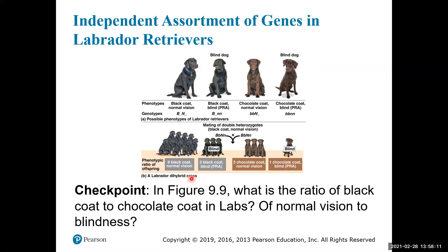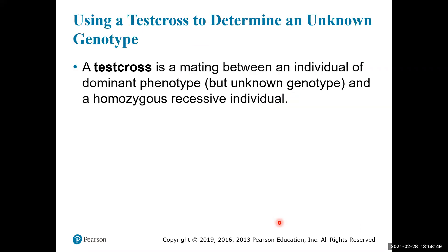We can also look at each character individually within that result: black coats to chocolate coats is 12 to 4, which is a 3:1 ratio. Normal vision to blind is also 12 to 4, also a 3:1 ratio. This shows that each individual character still follows the monohybrid 3:1 phenotypic ratio even within a dihybrid cross.